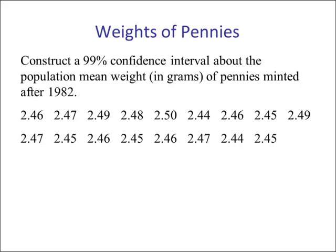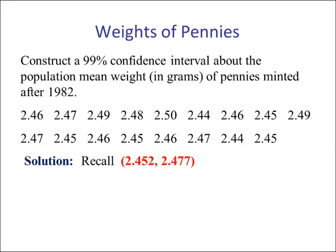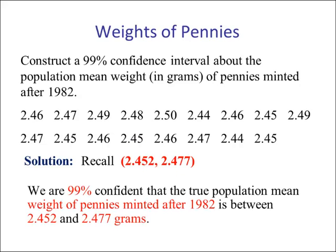Example 4 — weights of pennies: we had a sample of 17 pennies minted after 1982, weighed and measured in grams. This was a 99% confidence interval. To interpret: we are 99% confident that the true population mean weight of pennies minted after 1982 is between 2.452 and 2.477 grams.